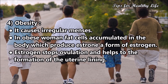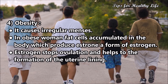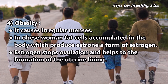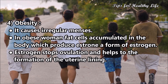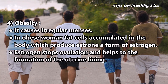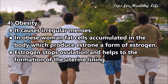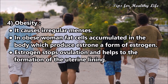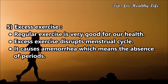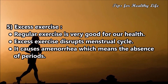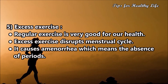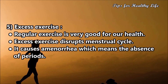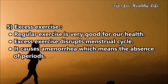Cause 4: Obesity. It causes irregular menses in obese women. Fat cells accumulated in the body produce estrone, a form of estrogen. Estrogen stops ovulation and contributes to the formation of the uterine lining.